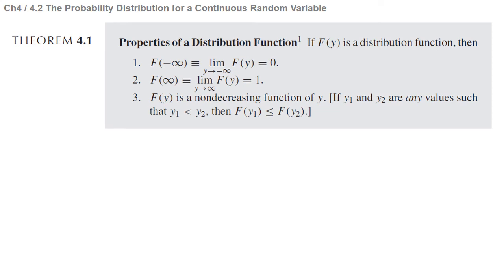This is Theorem 4.1: Properties of a Distribution Function. If F is a distribution function, then: first, the limit as y goes to minus infinity of F(y) equals 0; second, the limit as y goes to infinity of F(y) equals 1; and third, F is a non-decreasing function of y — if y1 < y2, then F(y1) ≤ F(y2).